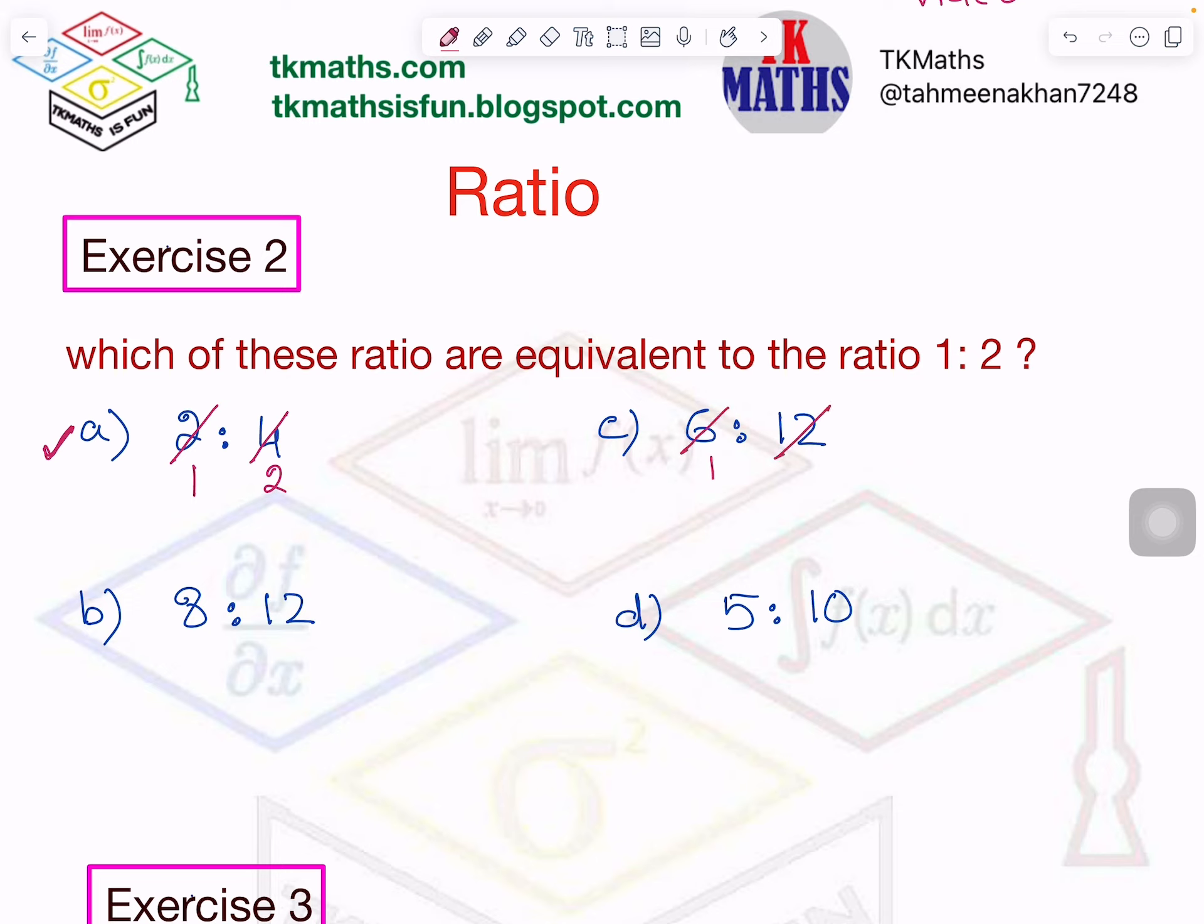6 times 1 is 6, 6 times 2 is 12. So this is also equal to 1 is to 2.